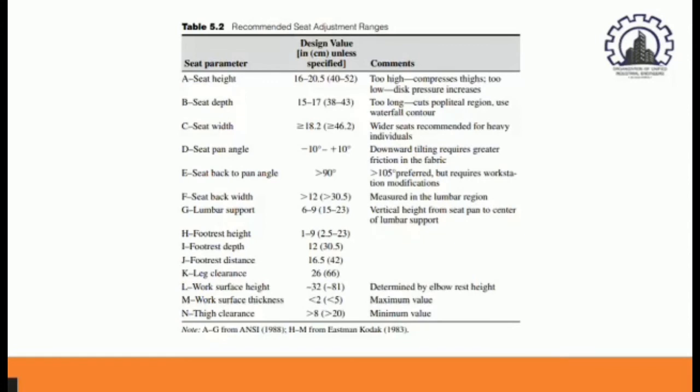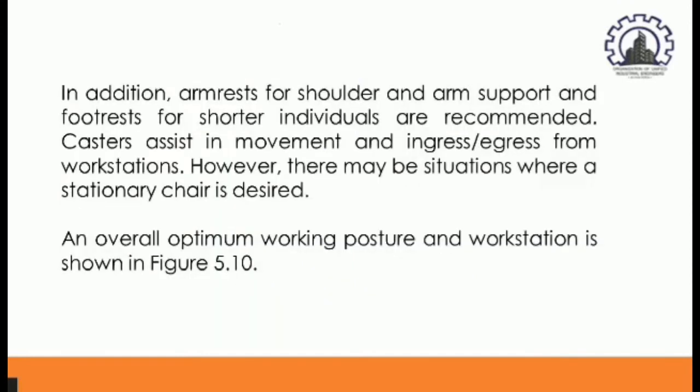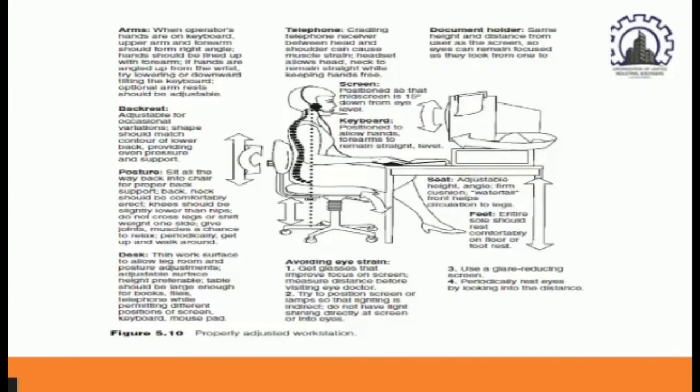Specific recommendations for seat height and other seat parameters are given in the table 5.2. Table 5.2 shows recommended seat adjustment ranges in which you can see seat parameter, design value in inch or centimeter unless specified in the comments. In addition, armrest for shoulder and arm support and footrest for shorter individuals are recommended. Casters assist in movement and ingress which is going or entering or egress which is going out or leaving from the workstation. However, there may be situations where a stationary chair is desired. An overall optimum working posture and workstation is shown in the figure 5.10. Figure 5.10 shows properly adjusted workstation for the arms, backrest, posture, desk, telephone, screen, keyboard, document holder, seat, feet, and avoiding eye strain.